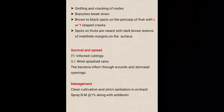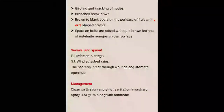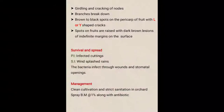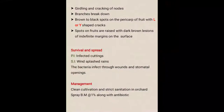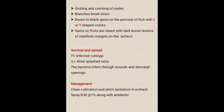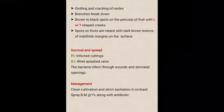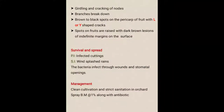These points are all about the symptoms. Now we discuss about the survival and spread. The primary source of infection is infected cuttings. So if the farmer is going to develop his orchard, during the plantation he must use healthy cuttings which are disease-free. The secondary source of infection is wind, splash, and rain. The bacteria infect through wounds and stomatal openings.